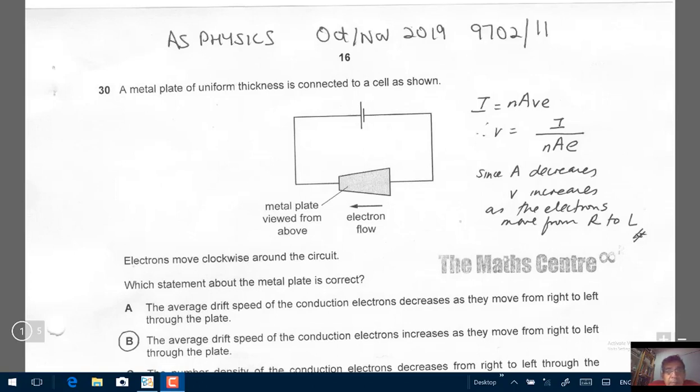Hello. Welcome to the Maths Centre. In this video, we are going to look at two multiple choice questions. They appeared in the AS Physics exam, October-November 2019. Subject code is 9702 and it's paper 11.